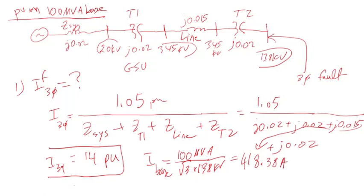So the three-phase fault current is equal to 14, which is per unit, times the base current, which is 418.38 amps.